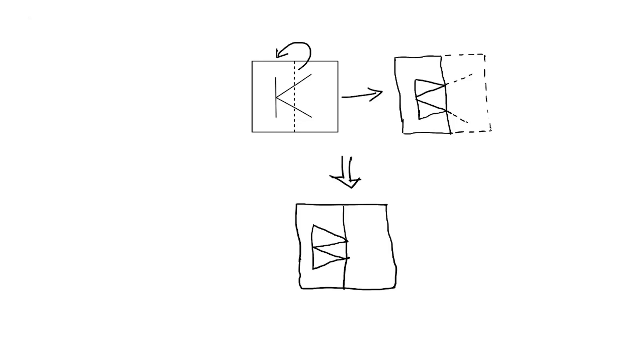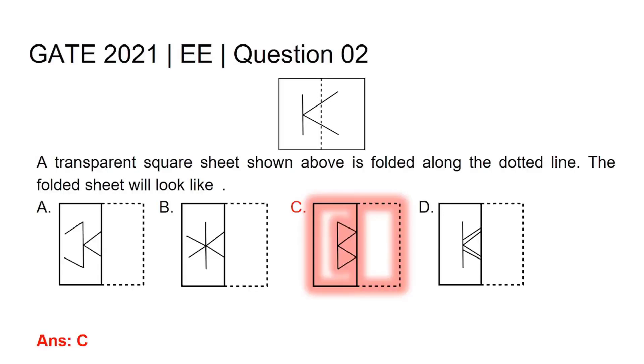So, our final answer will somewhat resemble the figure which we have drawn below. This one. Hence, the final answer for this aptitude question - a transparent square sheet shown above is folded along the dotted line. The folded sheet will look like that, right choice is choice C. Thank you.